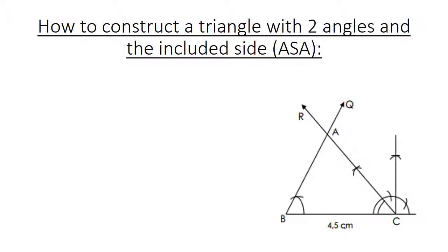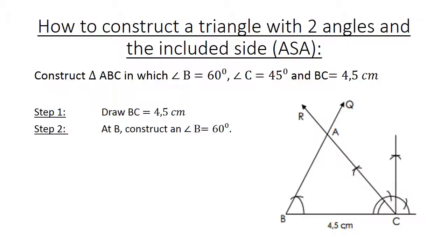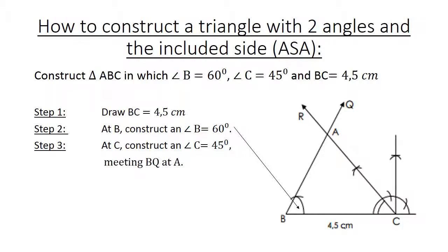How to construct a triangle with two angles and the including side. Construct triangle ABC in which angle B equals sixty degrees, angle C equals forty-five degrees, and BC equals four point five centimeters. Step one: draw BC equals four point five centimeters. Step two: at B, construct angle B equals sixty degrees. Step three: at C, construct angle C equals forty-five degrees, and extend the lines to meet at A.